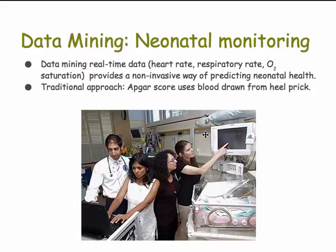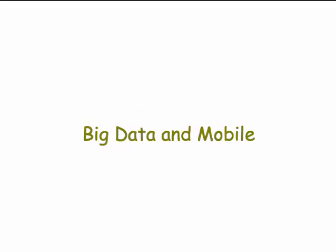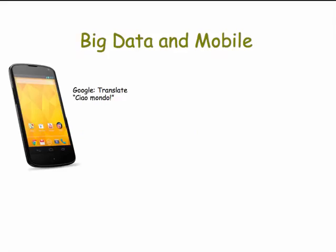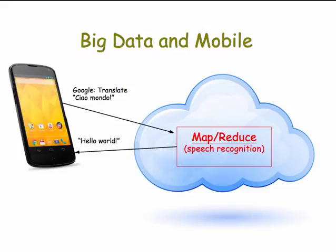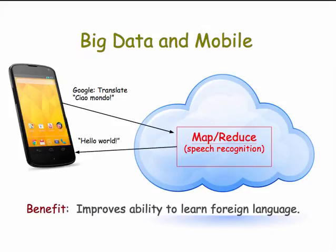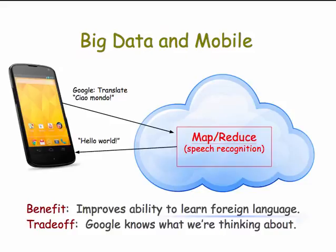Our course is in mobile computing — so what's the relationship between big data and mobile? Increasingly, there's a conversation between your smartphone and the cloud where big data processing is done. For example, using Google Translate, you say something into your phone like 'Ciao, mondo!' and the app sends it to a processor online, which uses perhaps MapReduce to recognize your speech and sends back 'Hello World' — the translation into English. This is a huge benefit if you're learning a foreign language, but the trade-off is Google knows what you're thinking about, talking about, and where you are.